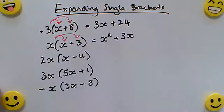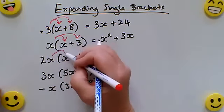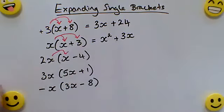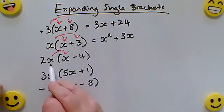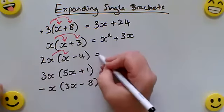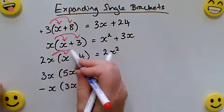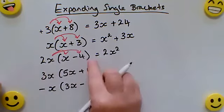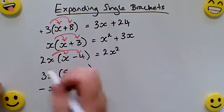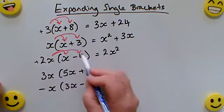Here we've got 2x outside of the brackets, so this is 2x times x. So that is 2x squared. And then 2x times negative four. Now this is a plus 2x times by a negative, so that means my answer is negative.